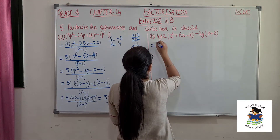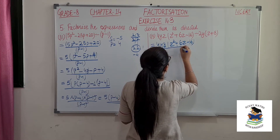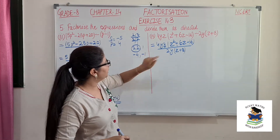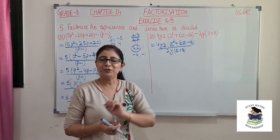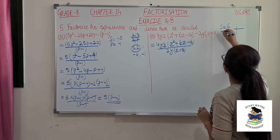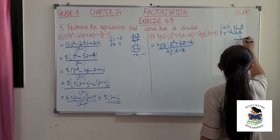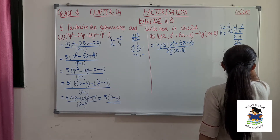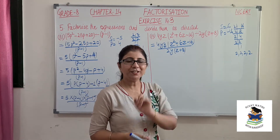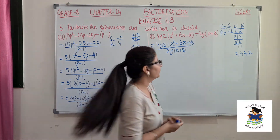The next part is 4yz(z squared plus 6z minus 16) over 2yz plus 8. We will factorize the quadratic using split the middle term. The sum should be 6 and the product is minus 16. We factorize 16 as 2 times 2 times 2 times 2. Since the product is negative, one term is negative, and since the sum is positive, the smaller number takes the negative sign.